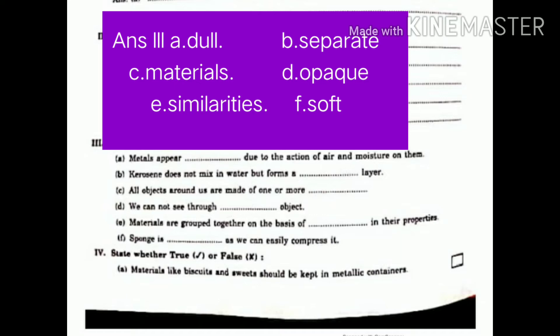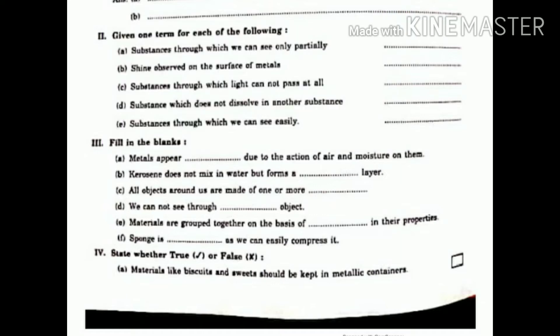E. Materials are grouped together on the basis of similarity in their properties. F. Sponge is soft as we can easily compress it. Fourth. State whether true or false.